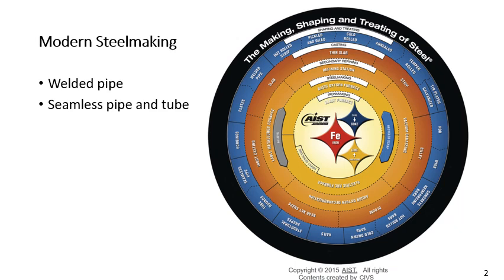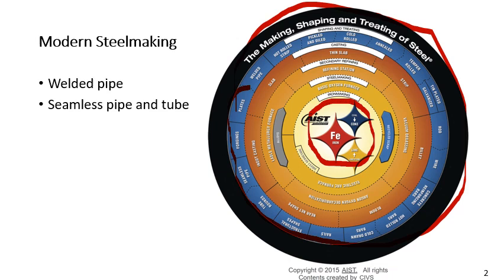The idea of the steel wheel is starting with the iron ore and working your way through this wheel to the outer blue sphere and producing the products for the end user. You can cross the dotted lines but you're not allowed to cross the solid lines. There are a couple different products we're interested in: welded pipe and seamless pipe and tube.